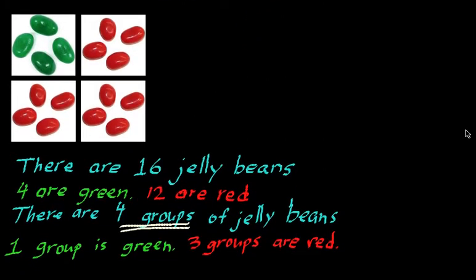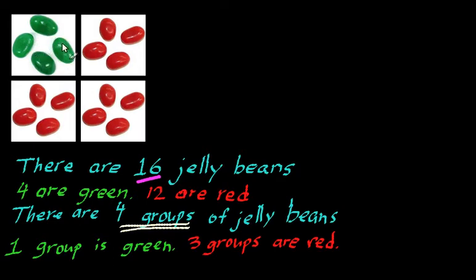So now we have a lot more jelly beans here. Let's count how many jelly beans we have — there are a few ways we can count. We have lots of different groups of jelly beans: 1, 2, 3, 4, 5, 6, 7, 8, 9, 10, 11, 12, 13, 14, 15, 16 jelly beans. Another way you can count is to say there are four groups of four jelly beans — one group, two groups, three groups, and four groups. Each group has four jelly beans, giving you 4 plus 4 plus 4 plus 4, which is 16. That's the same as saying 4 times 4.